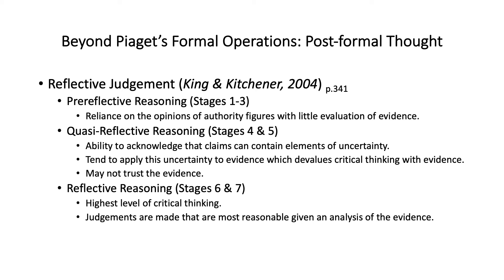Quasi-reflective reasoning is just that acknowledgement that things can come with a grain of uncertainty. Reflective reasoning, the highest level of King and Kirchner's reflective judgment, is when judgments are made given a best evidence, preponderance-of-the-evidence standard — like a civil court standard. They do an analysis of the evidence, weigh it, and come up with a conclusion based on what the best evidence is, allowing for a certain degree of error. Reflective reasoning is the highest level of reasoning.